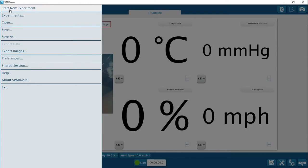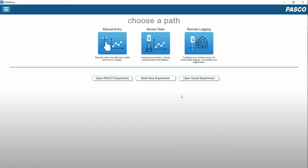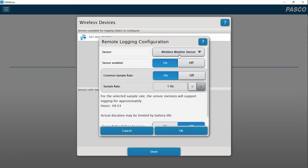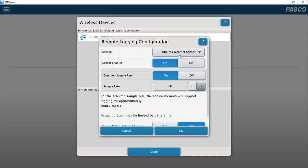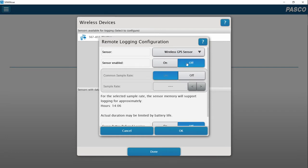I'm going to go ahead and start a new experiment. I don't need to save this one because we're going to have the data files for you. For this one, you're going to want to choose Remote Logging, and I see my weather sensor here. And a few things to note. This has a GPS sensor in it, which is going to take up battery life. It's going to take up memory, and we don't need to use it for this, so we're going to disable it. So if you click on the drop-down menu here and go to Wireless GPS Sensor, you can disable that sensor.